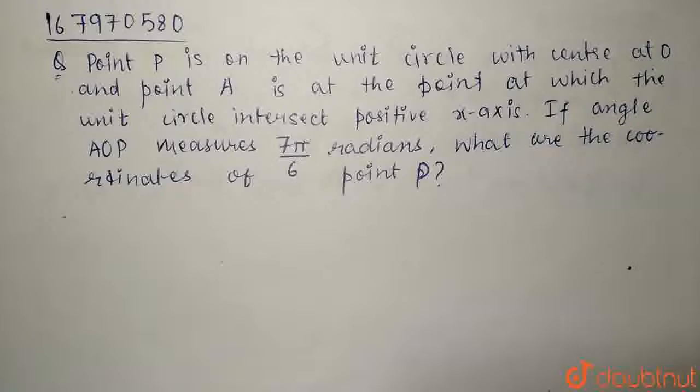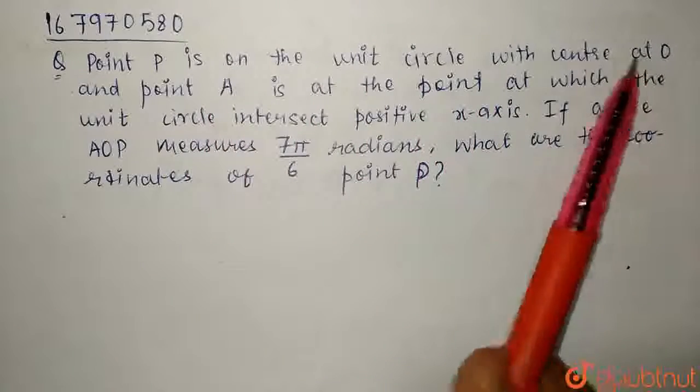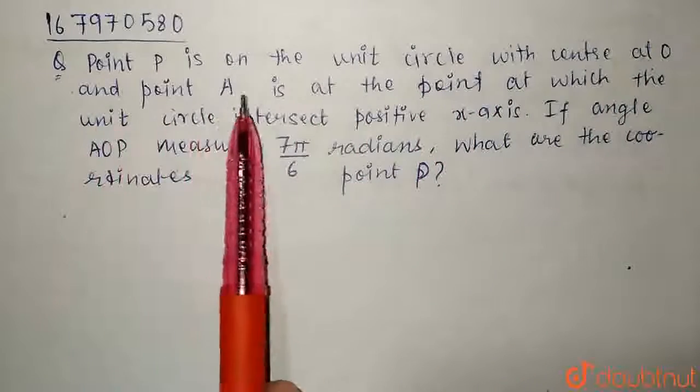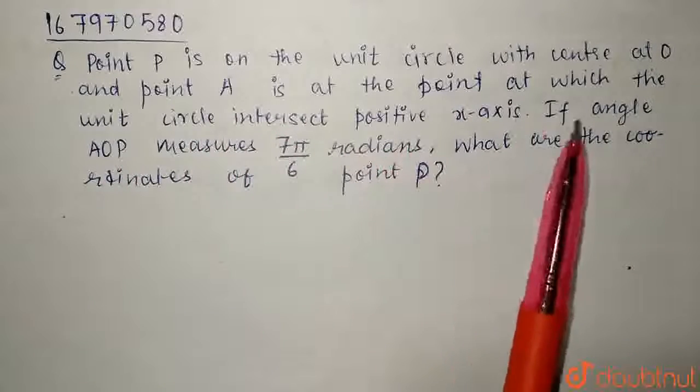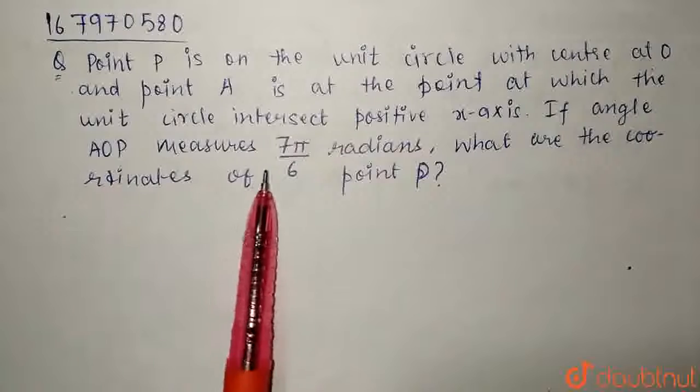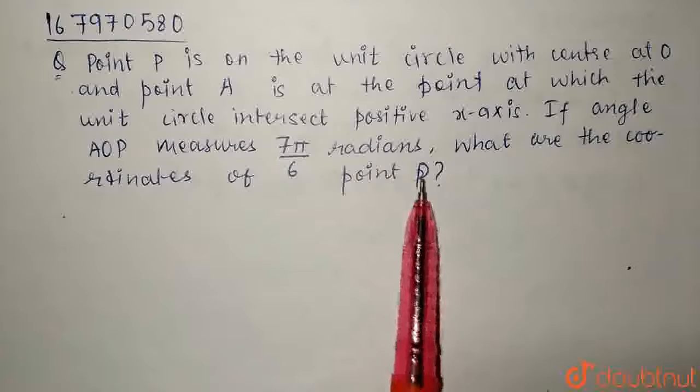Hello, the question is: point P is on the unit circle with center at O and point A is at the point at which the unit circle intersects positive x-axis. If angle AOP measures 7 pi by 6 radians, what are the coordinates of point P?